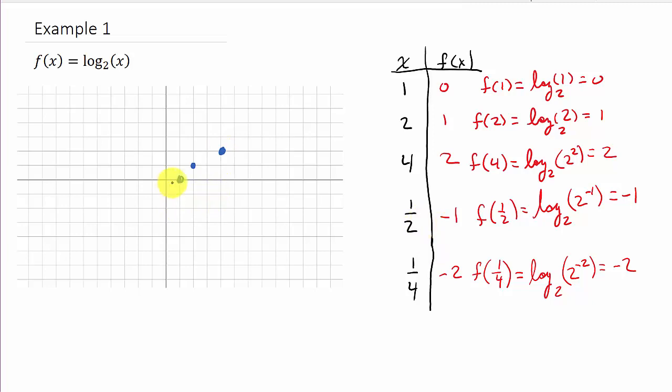And then 1 half, negative 1. So that's about halfway in between and I go down 1. And then 1 fourth, negative 2. So 1 fourth, that's a little closer to the axis here, and y is negative 2. And so my graph is going to look something like this.